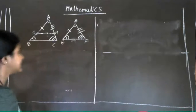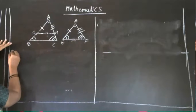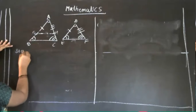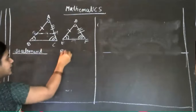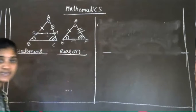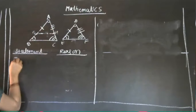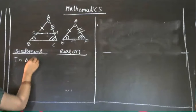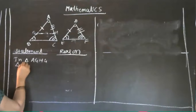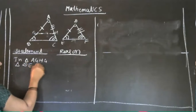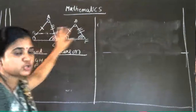Okay students, we have these triangles. Now, proof part: one side is the statement part, another side is the reason part. What we have to do is first choose triangle AGH and triangle DEF. In that, we observe that AG is equal to DE — because of construction.